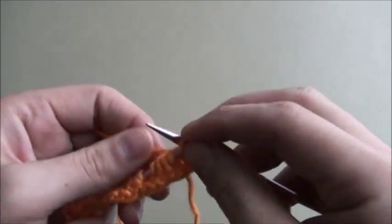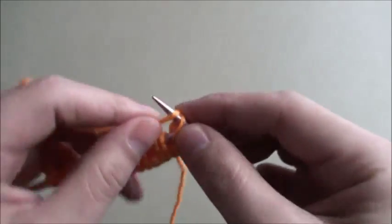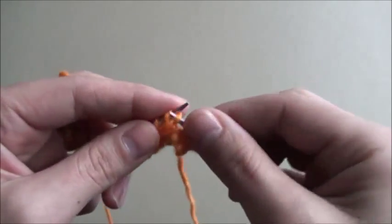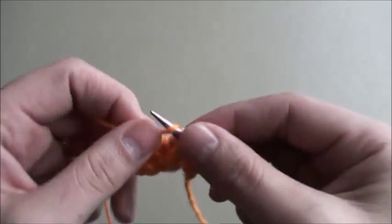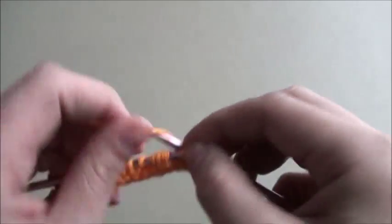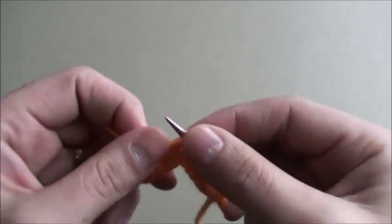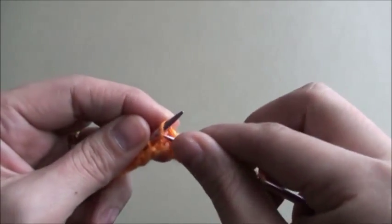For row 3 we will repeat row 1 which is knit 2, purl 2. Knit 2, purl 2. So we will knit 2 and purl 2 throughout this row.